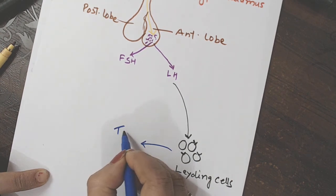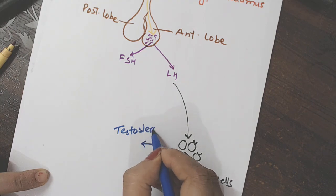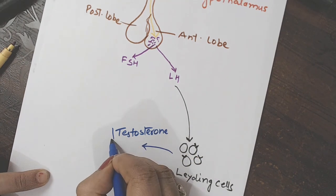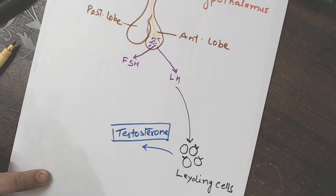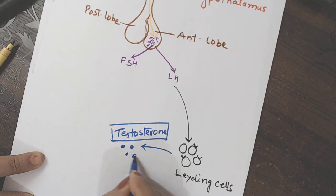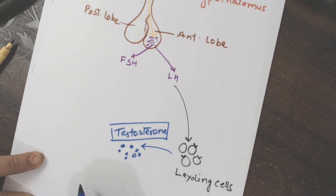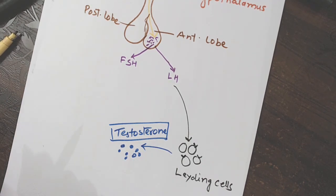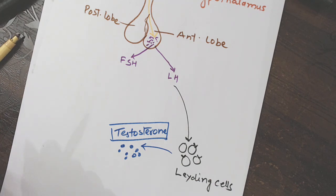will release a hormone known as testosterone. What? Testosterone. Jiski hamein talash thi. Testosterone. And testosterone ye man lete hai. This is testosterone released by Leydig cells.